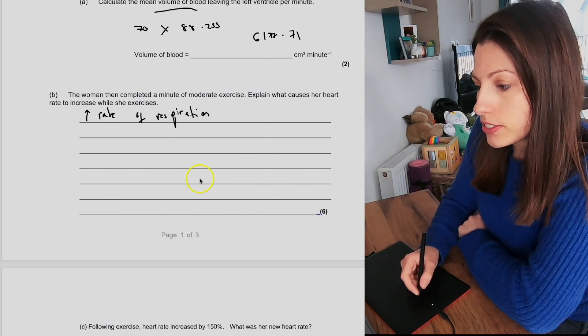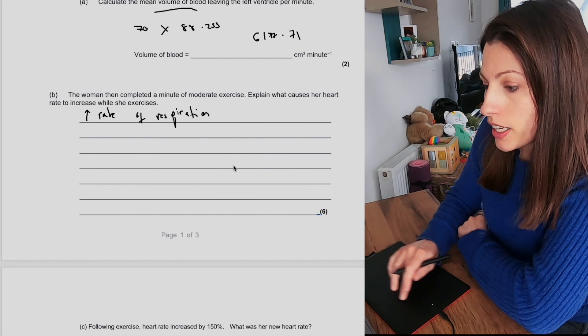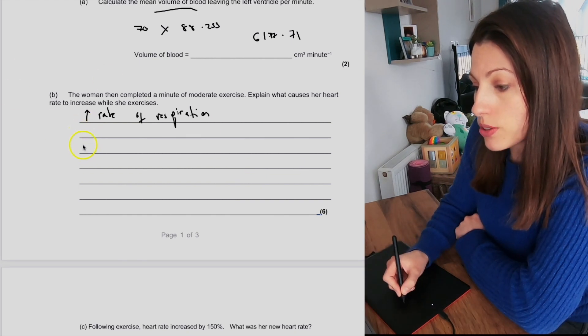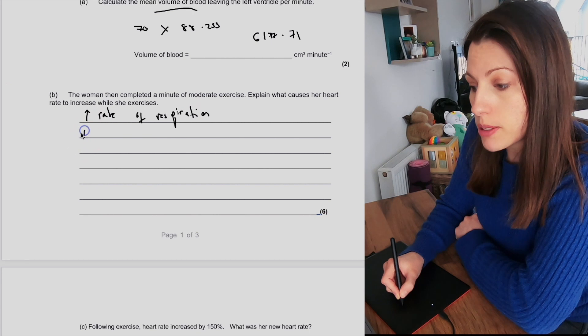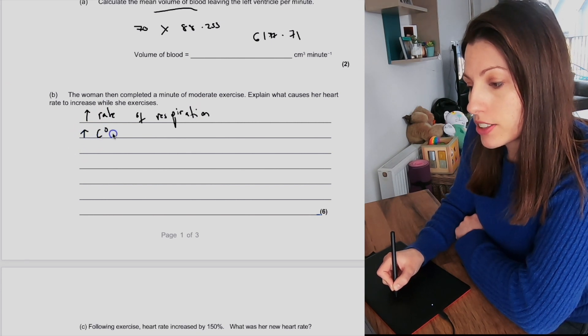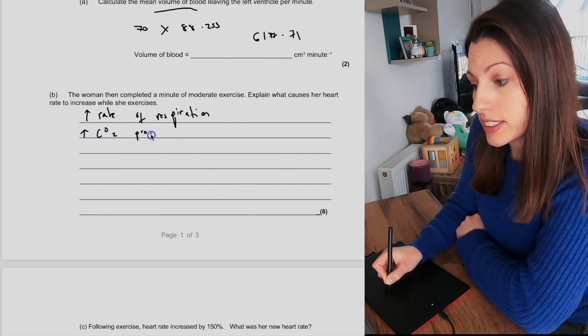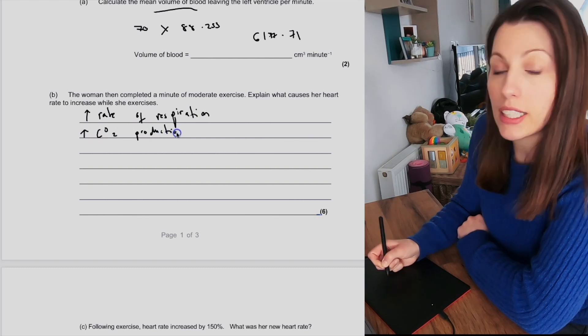If we have an increase in respiration, our second mark then would be that there is also going to be—if there's more respiration, there's going to be an increase in the carbon dioxide production. So that's your second mark.